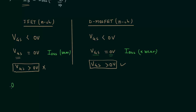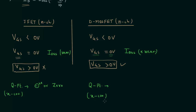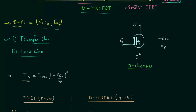Now what will be the effect on the operating point? The x-coordinate of the operating point in case of N-channel JFET can be negative or zero — these are the two possibilities. But in case of N-channel D-MOSFET, the x-coordinate of the operating point can be negative, zero, or positive. This is the difference in the operating point between the two cases. Once you understand how to plot the transfer curve, you can plot the load line and their intersection gives the operating point.